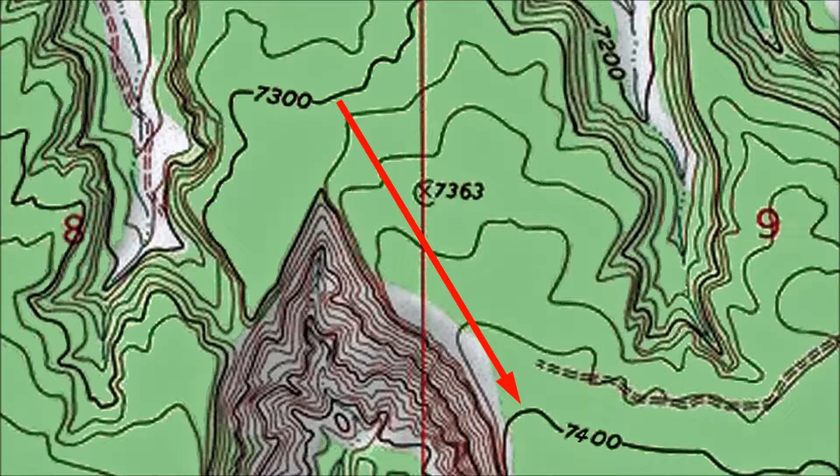Here traveling the route shown by the red arrow involves an elevation gain of 100 feet which you achieve by traveling between two index contour lines that are the standard five contour lines apart. 100 divided by 5 equals 20, so the contour interval on this map is, as I claimed earlier, 20 feet.